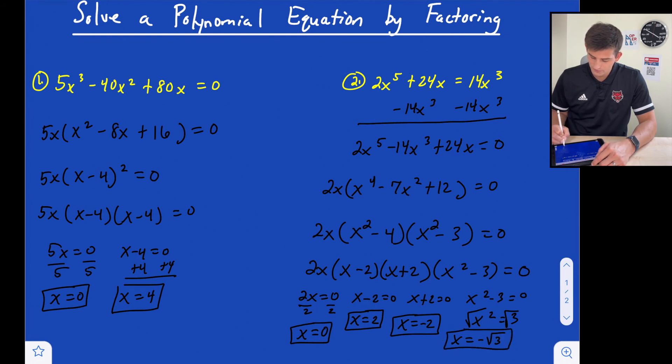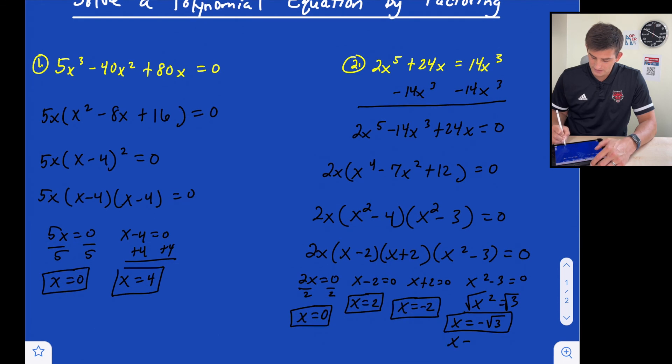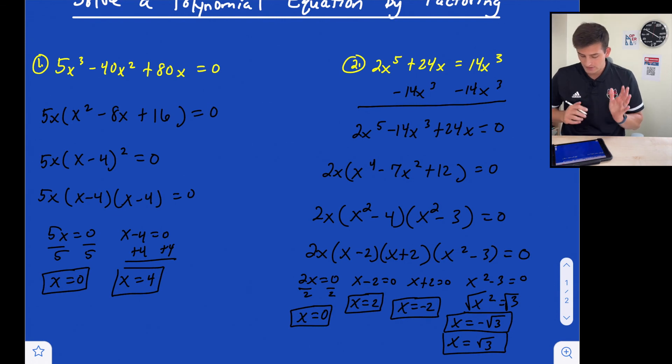So we're going to say x is equal to negative the square root of 3, so negative root 3, and x is also equal to positive root 3. So we actually have five roots on this one: zero, 2, negative 2, negative root 3, and positive root 3.